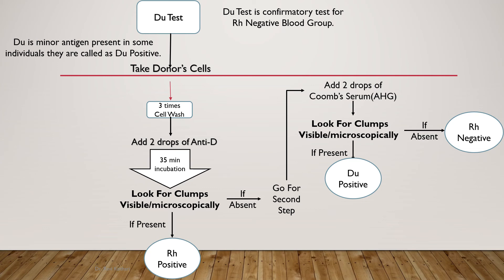The Du test is a confirmatory test for Rh-negative blood, in which Du is a minor antigen present in some individuals, who are called Du positive. In this test, take the donor's cells, perform three washes, add two drops of anti-D, then wait 35 minutes and look for clumps. If clumps are present, the patient is Rh positive. If negative, proceed to the second step: add two drops of Coombs serum and look for clumps. If clumps are present, the patient is Du positive; if no clumps, the patient is confirmed Rh negative.